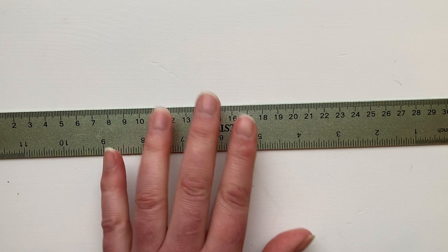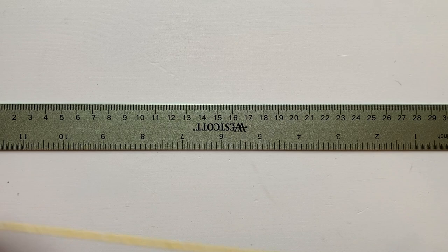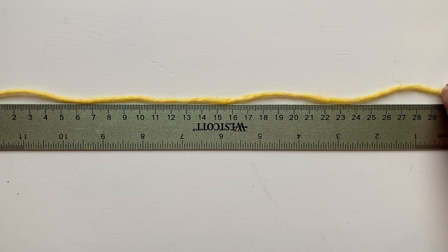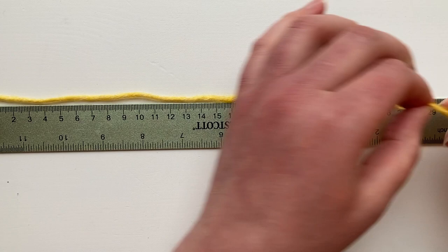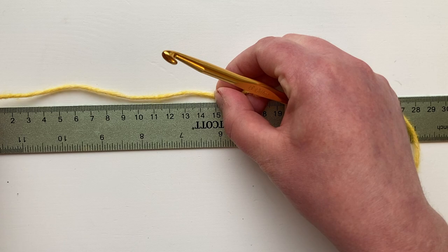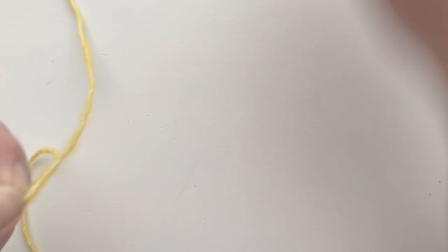Don't forget though that you always need to leave a tail for sewing in and also just a little bit of leeway. So I like to leave maybe a 15 centimeter tail. So 30 plus 15 is 45 centimeters and that should work nicely for our long tail cast on. So at 45 centimeters from the end we are going to make a slipknot.